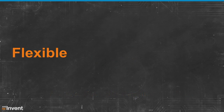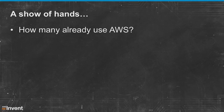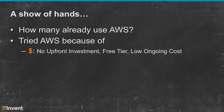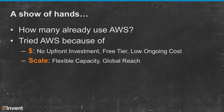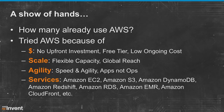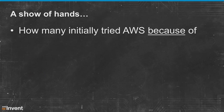The first keyword is flexible. A quick show of hands to get a little blood flowing after lunch: how many here already use AWS? How many initially tried AWS because of cost? Not so many. Scale — a bit more. Agility? Or how many for one of the given services, whether EC2 or Redshift? Conversely, how many initially tried AWS because of security or identity? So my point here is you're usually drawn to Amazon Web Services for one of those prior needs.